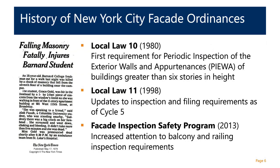New York City's first facade ordinance — and the first ordinance mandating routine facade inspections anywhere — was enacted in 1980 under Local Law 10. This was unfortunately enacted following the death of Grace Gold, a Barnard student struck by a piece of falling masonry in Upper Manhattan. Local Law 10 required routine inspection of the street-facing building walls on buildings greater than six stories.